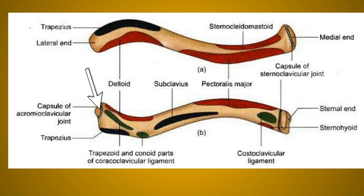Regarding attachments: at the lateral end, the margin of the articular surface for the acromioclavicular joint gives attachment to the joint capsule. At the medial end, the margin of the articular surface for the sternum gives attachment to three main structures: the fibrous capsule of the sternoclavicular joint all around, the articular disc posteriorly, and the interclavicular ligament superiorly.